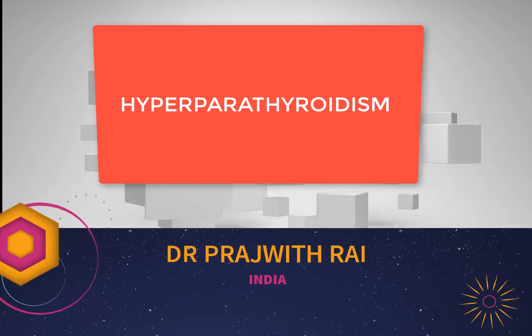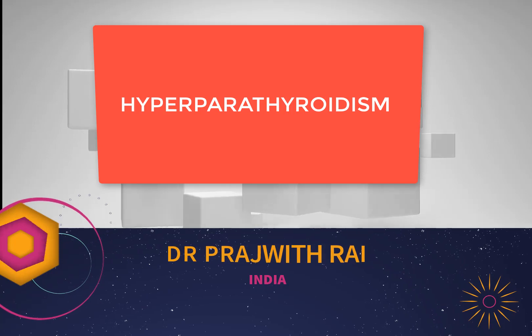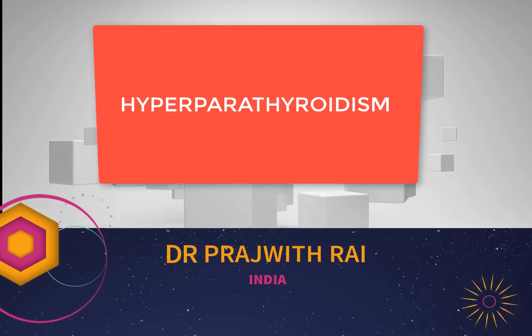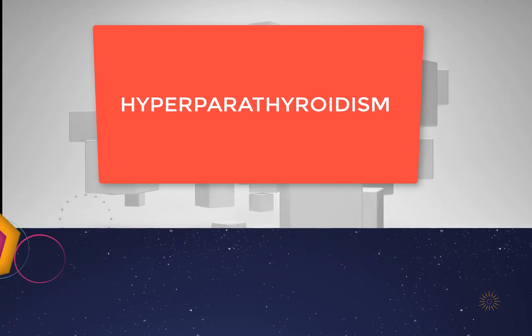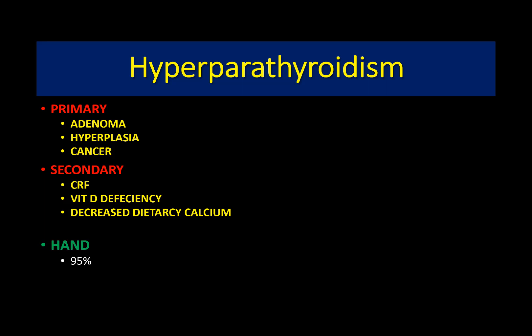Hyperparathyroidism is characterized by increased production of parathyroid hormone by the parathyroid gland. There are two types: primary hyperparathyroidism, which involves autonomous production of parathyroid hormone, and secondary hyperparathyroidism.